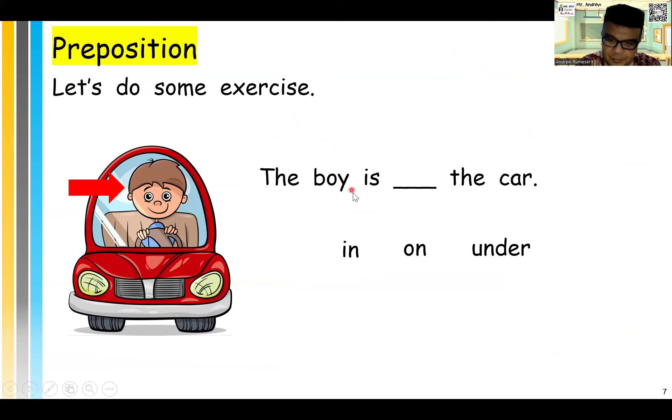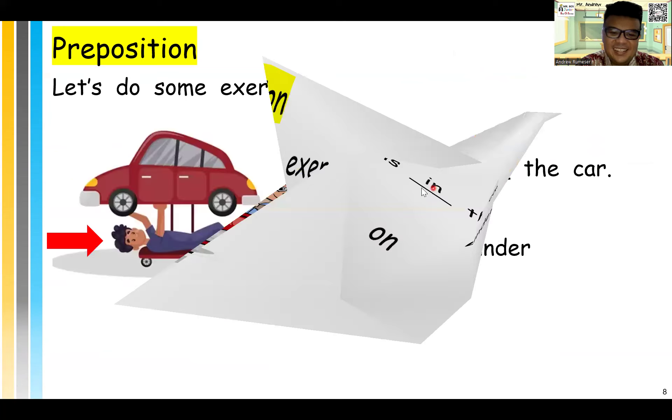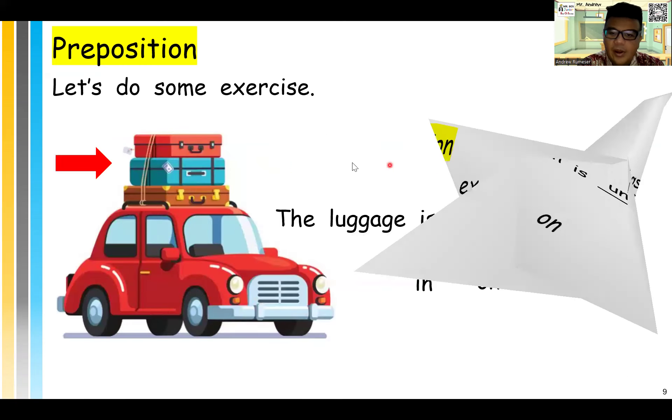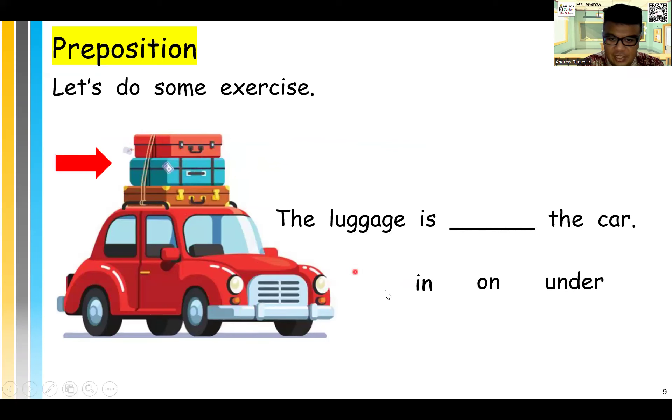Okay, let's do some exercise. You can pause the video before we show the answer. The boy is in, on, or under the car. Like this? That's right. In the car. The boy is in the car. Next, where is the man? The man is what? In, on, or under the car. Down here means under. That's right. Under the car. Where is the luggage? The luggage is in, on, or under the car. Where? Like this? It's on the car, right? On top of the car, touching the roof of the car, right?